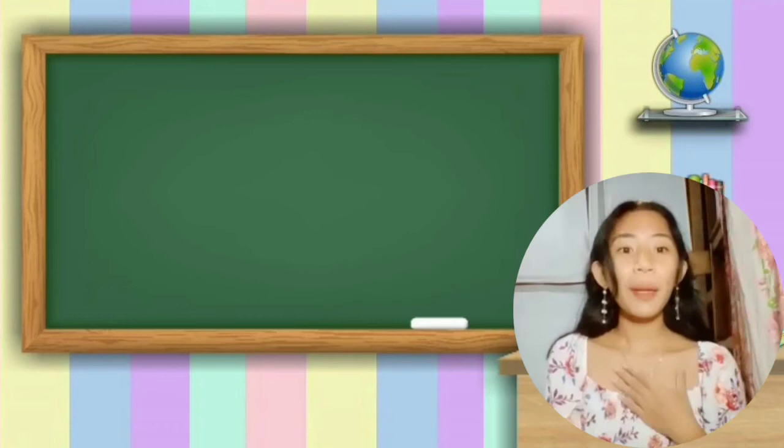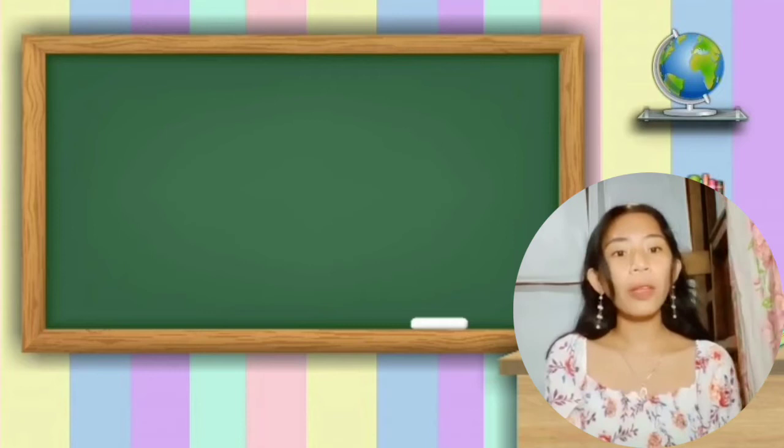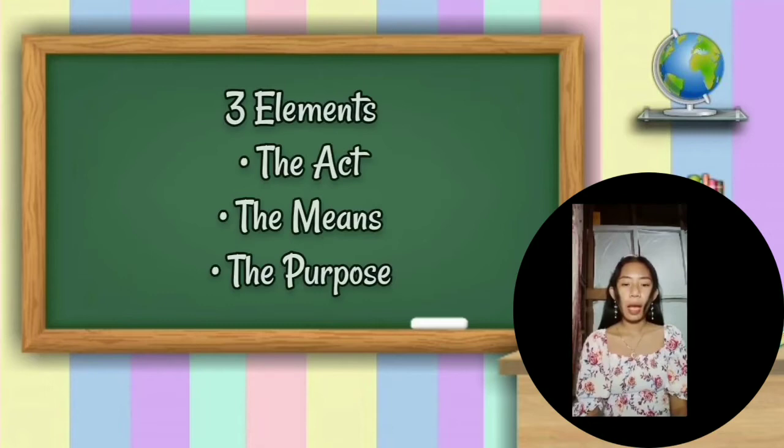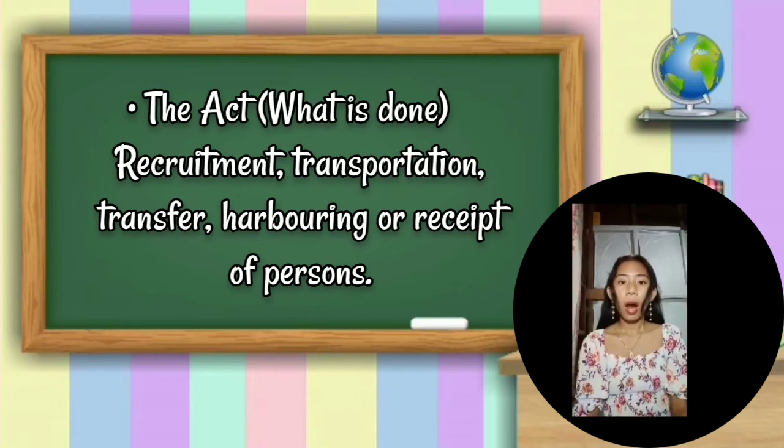Hi everyone, my name is Princess Arica Iribilias, and for my part, I will discuss the elements of human trafficking. Human trafficking has three elements: the act, the means, and the purpose. The act, or what is done, are actions which may be recruiting, harboring, transporting, providing, or obtaining of an individual.